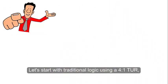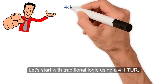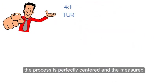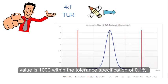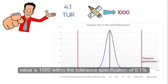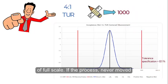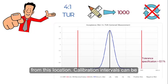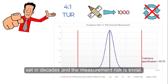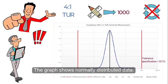Let's start with traditional logic. Using a four-to-one TUR, the process is perfectly centered and the measured value is 1000, within the tolerance specification of 0.1 percent of full scale. If the process never moved from this location, calibration intervals can be set in decades and the measurement risk is trivial.